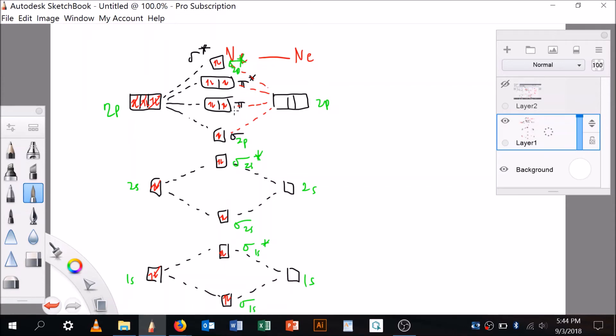This is a pi 2p bonding orbital, this will be a pi 2p star. The very top one is sigma 2p star, the one below it is a pi 2p, and the one below that is sigma 2p. That one is sigma 2s star and the one below it is sigma 2s.